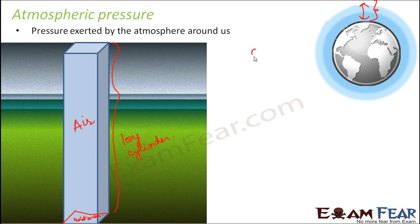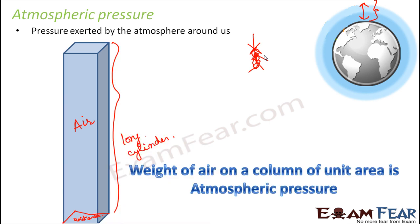Even inside our body we have several gases and they are also exerting some pressure. So the external atmospheric pressure and the internal body pressure get compensated, which is why we do not feel the atmospheric pressure. We can say that the weight of air on a column of unit area is atmospheric pressure — whatever is the weight of the air on that unit area is atmospheric pressure.